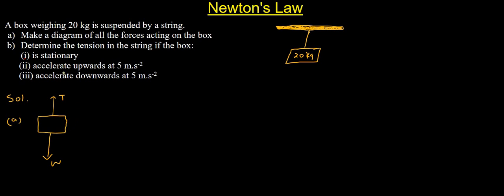Then let's look at question number two: determine the tension in the string if the box is stationary. If our box is stationary, it means our box is at equilibrium — it's not moving left or right or up and down. There is no force acting on the right or left hand side; we only have our tension and our weight. So if they say determine the tension, it means our tension will be equal to our weight.